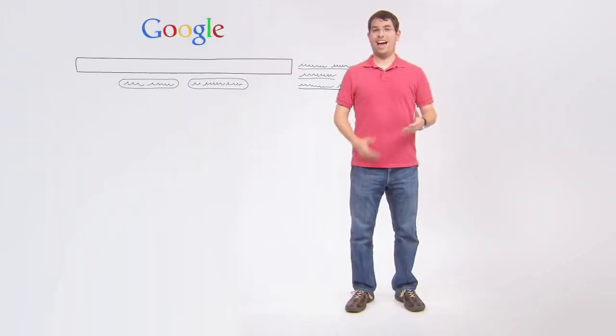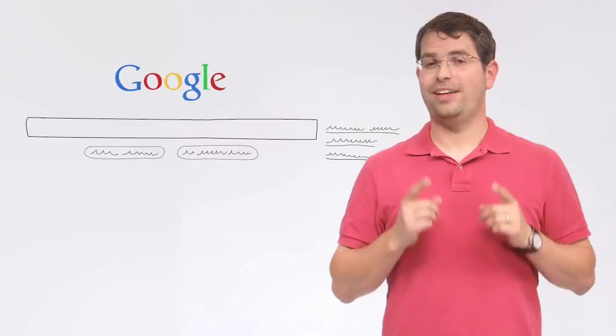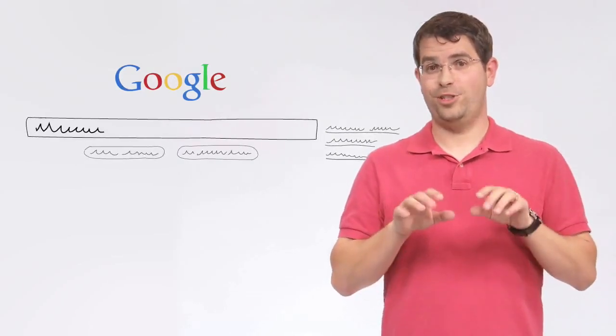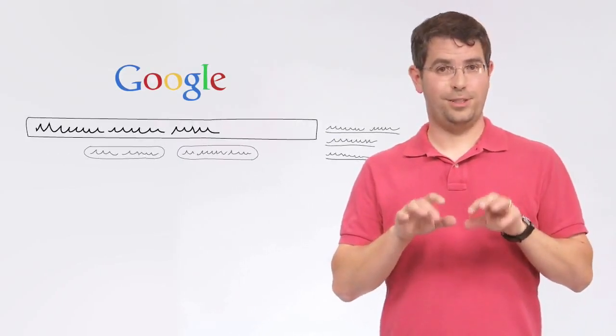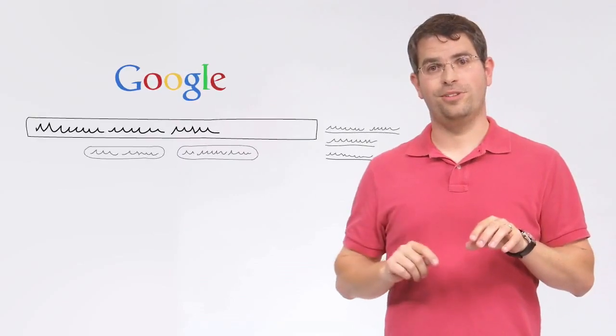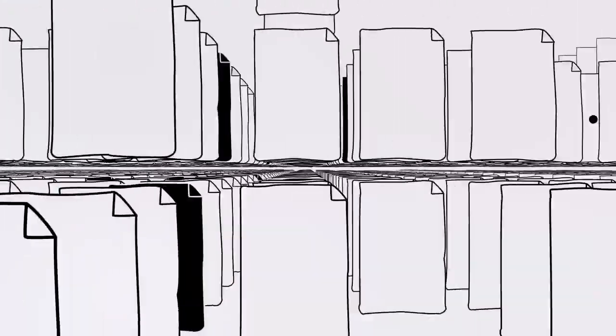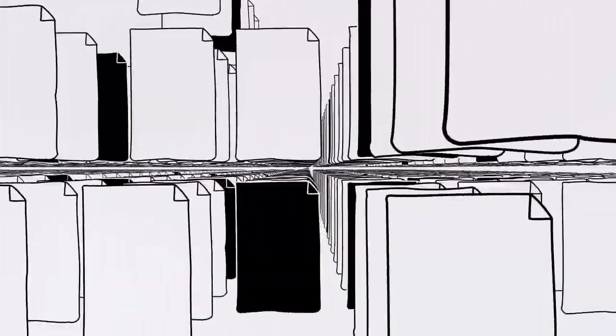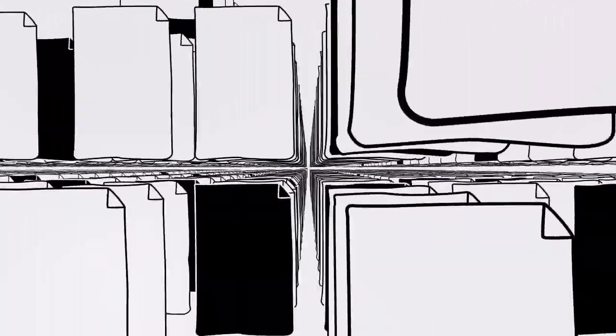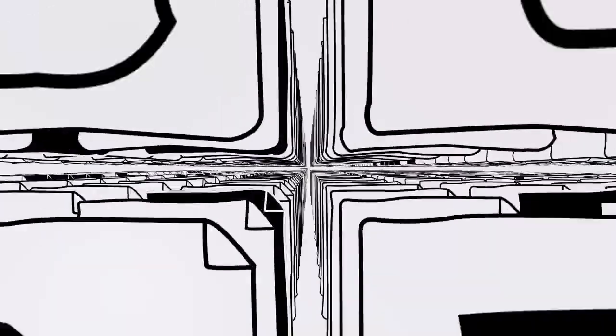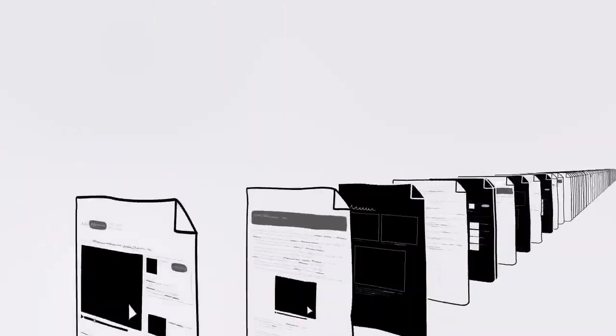Now suppose I want to know how fast a cheetah can run. I type in my search, say cheetah running speed and hit return. Our software searches our index to find every page that includes those search terms. In this case there are hundreds of thousands of possible results. How does Google decide which few documents I really want? By asking questions. More than 200 of them.